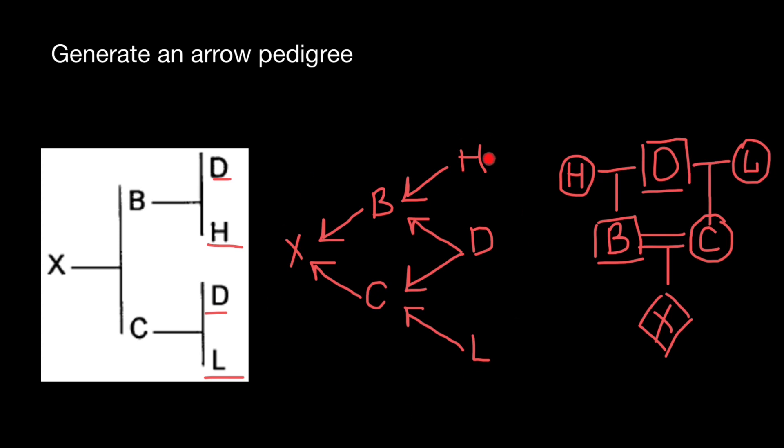When we use arrow pedigrees, we use it in order, for example, to find inbreeding coefficient, for example, of the individual X. And it is easier to use this arrow diagram than, for example, such pedigree or such pedigree.